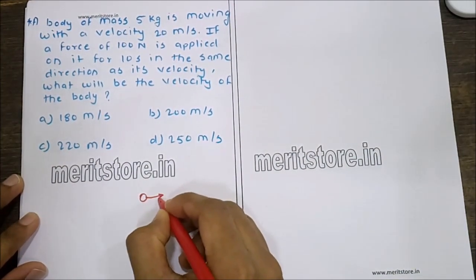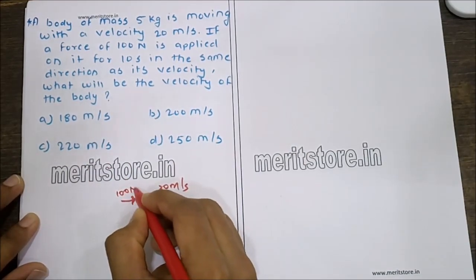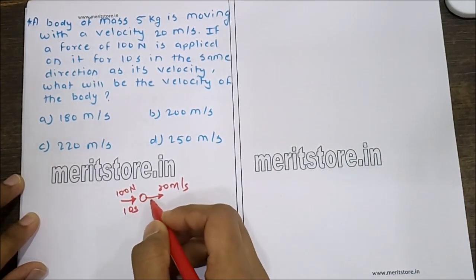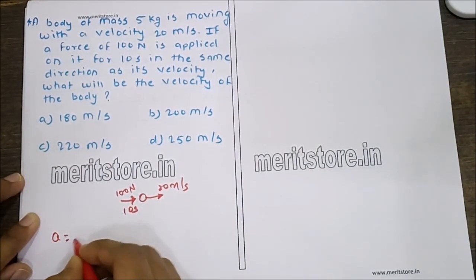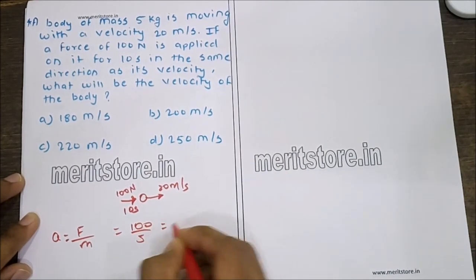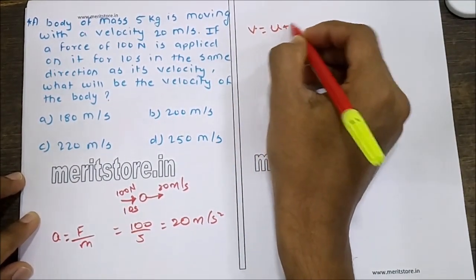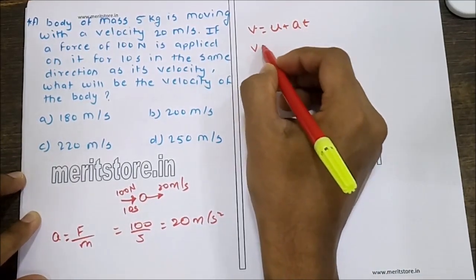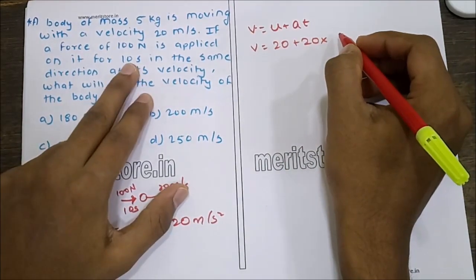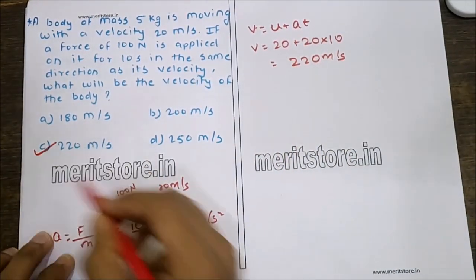The body moves with initial velocity 20 m/s. A force of 100 N is applied for 10 seconds in the same direction, causing a change in acceleration. Acceleration is force per unit mass: 100 divided by 5 kg = 20 meters per second square. Using V = U + AT: V = 20 + 20×10 = 220 meters per second. Hence option C is the correct answer.